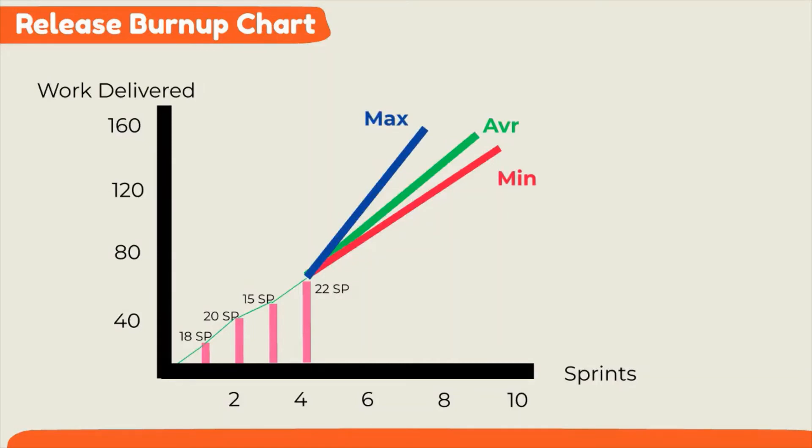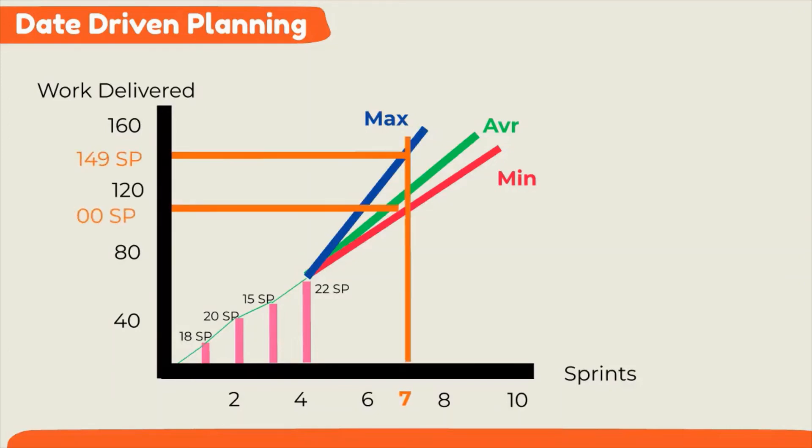Now, there are two ways product owner can engage with stakeholders using burn-up charts. First, we speak about date-driven planning. For example, if a stakeholder asks what can be delivered in sprint 7, by drawing the lines at intersection of each delivery line, product owner can tell the stakeholder by sprint 7 the team will be able to deliver between 100 and 149 story points. Product owner can then show the stakeholder the user stories from the product backlog that will fit in this estimation.